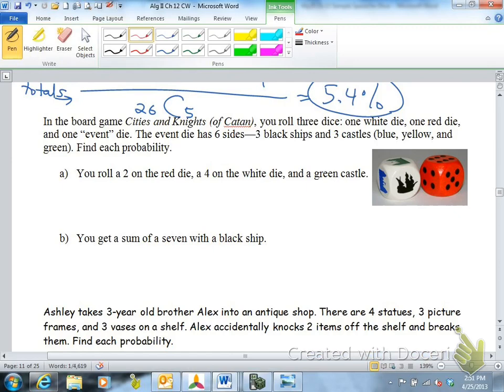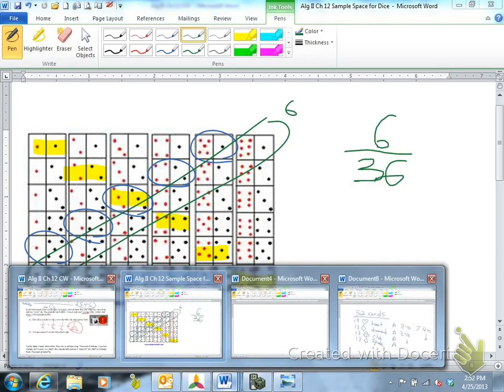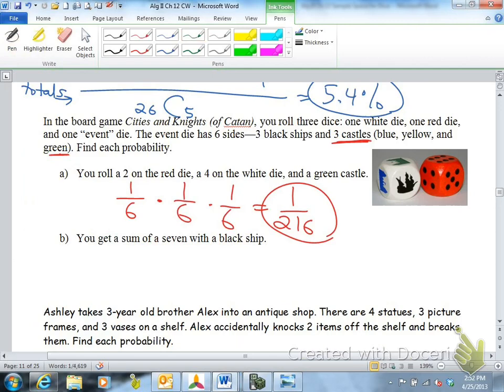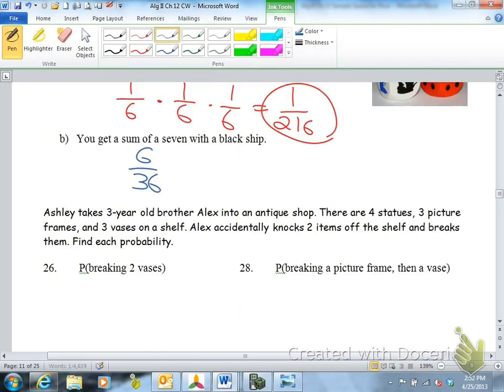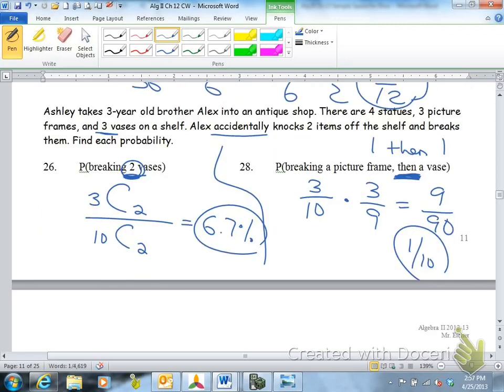Okay, so probability you roll a two on the red die. A two on the red die is one sixth. A four on the white die. There's only one four on the white die, so it's one sixth. And then a green castle. There's three castles and only one of them is green. So it'd be one sixth. So your probability of getting a two, a four, and a green is one out of 216. It's really common in this game to get a sum of a seven. And sum of a seven you could get in all these ways, which there are six ways to get a sum of a seven. So it's six out of 36 ways to get a sum of a seven. And then a black ship. There are three black ships out of six. So you'd have one sixth times one half. There's one twelfth.